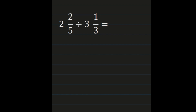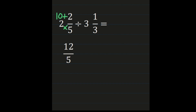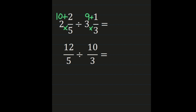In this example we have 2 and 2/5 divided by 3 and 1/3. Our first step is to turn the mixed numbers into improper fractions. For 2 and 2/5: multiply 5 times 2 to get 10, then add the numerator — 10 plus 2 is 12 — giving 12/5. For 3 and 1/3: multiply 3 times 3 to get 9, then add 1 — 9 plus 1 is 10 — giving 10/3.